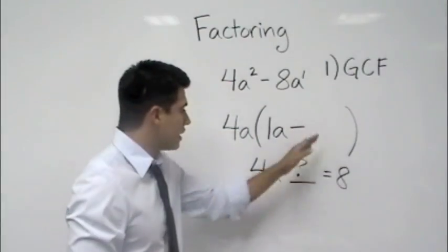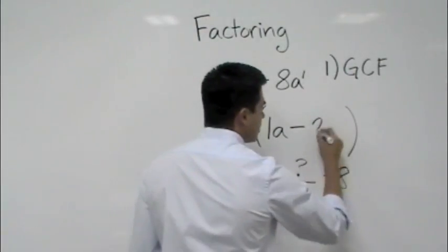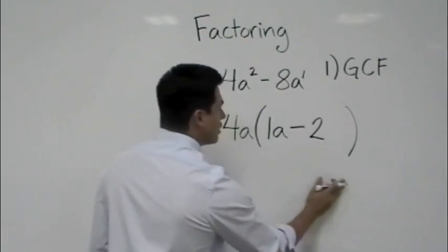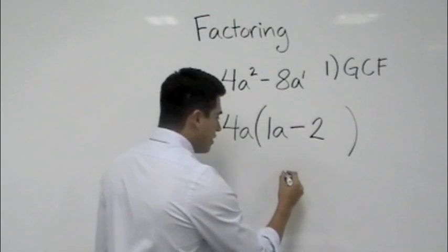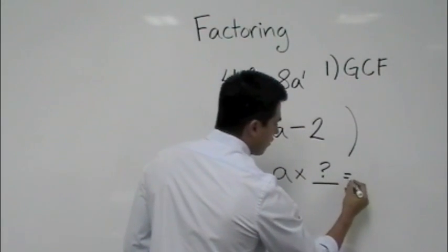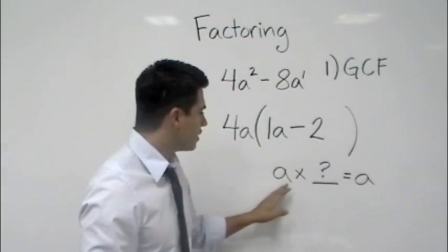And that's what we want to put in here. 4 times... oh, 4 times 2. That makes it a lot easier, right? Let's erase that now and let's look at the variables. So a times what number will give me a? Well, that one's a little easier, right?